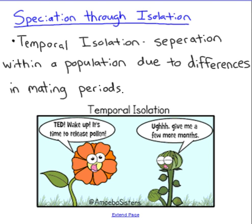Finally, there is temporal isolation. Animals and plants mate at different times of the year, so if one population develops two different mating times — one in the spring and one in the fall — two populations may arise because the spring group is no longer mating with the fall group. That is reproductive isolation: two groups no longer mating with each other, which can lead to the formation of new species.